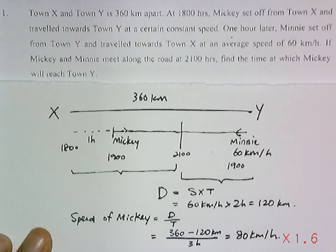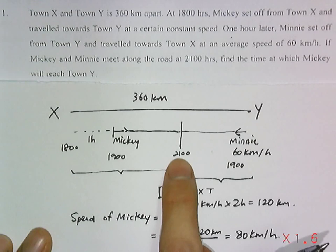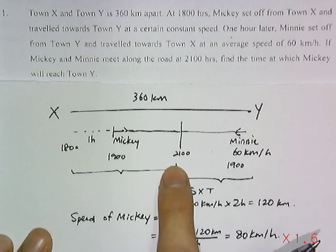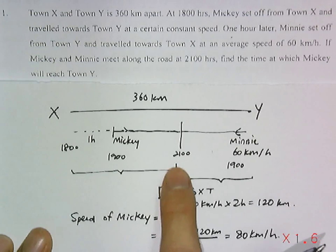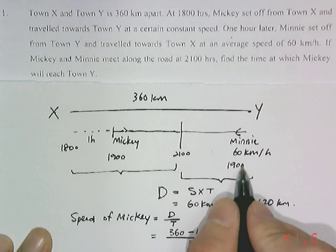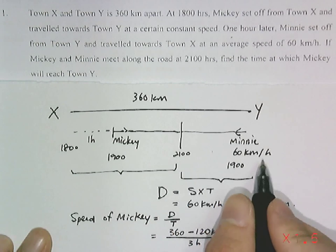The question asks, what time will Mickey reach town Y? From 1800 hours to this meeting point, it will already take Mickey 3 hours. Mickey will take some other time here to travel to town Y. It's not 2 hours, because this is Minnie's time.